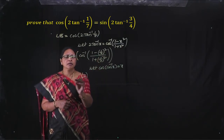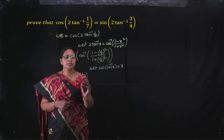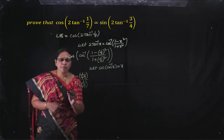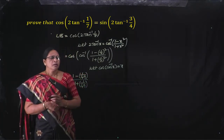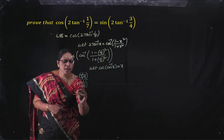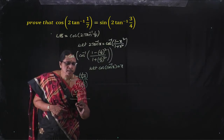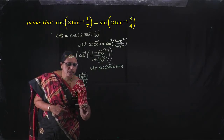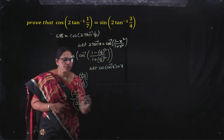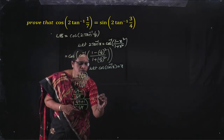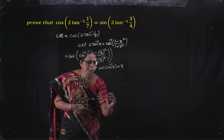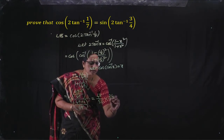That is 1 minus 1 by 49 by 1 plus 1 by 49. Take LCM in the numerator and denominator. LCM is 49, so numerator is 49 minus 1 and denominator is 49 plus 1. The 49s cancel, giving 48 by 50, which simplifies to 24 by 25.